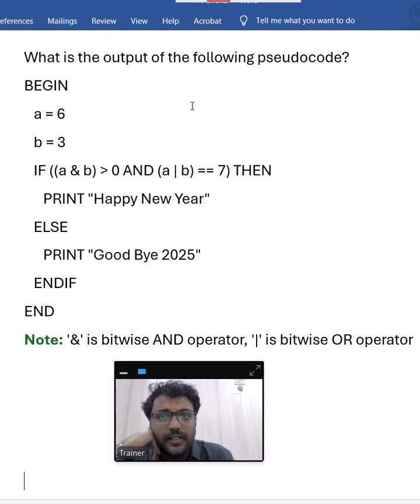Let us see about this question. Pseudocode question. A is assigned as 6 initially. B is given as 3.